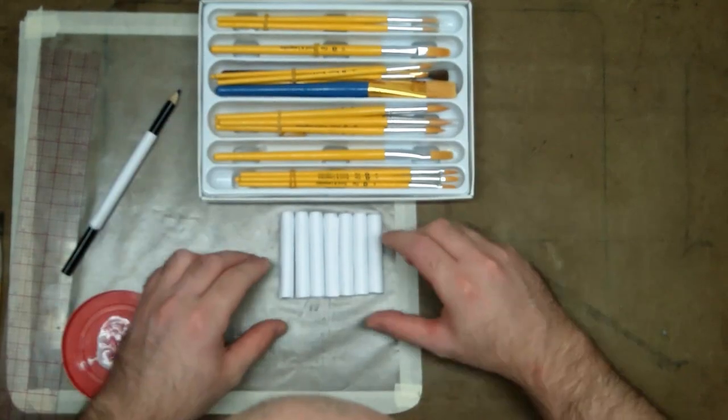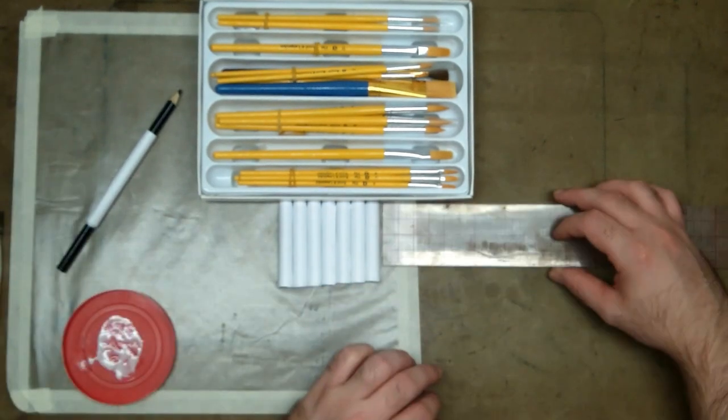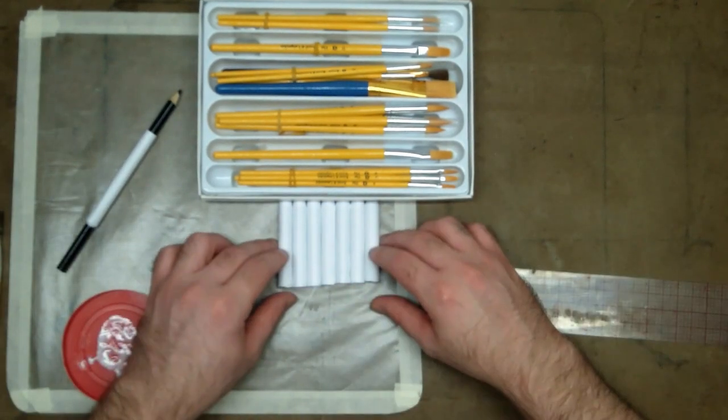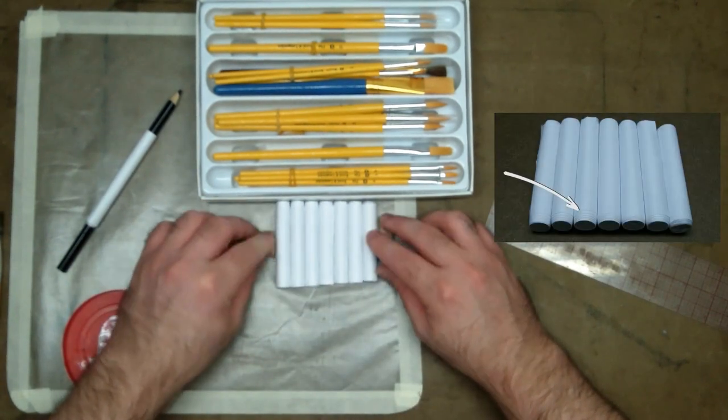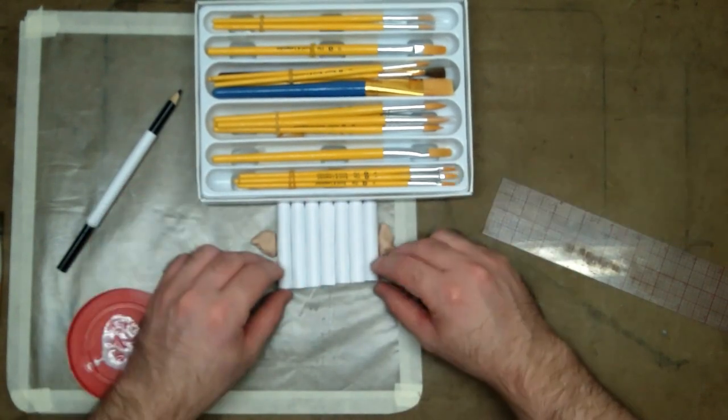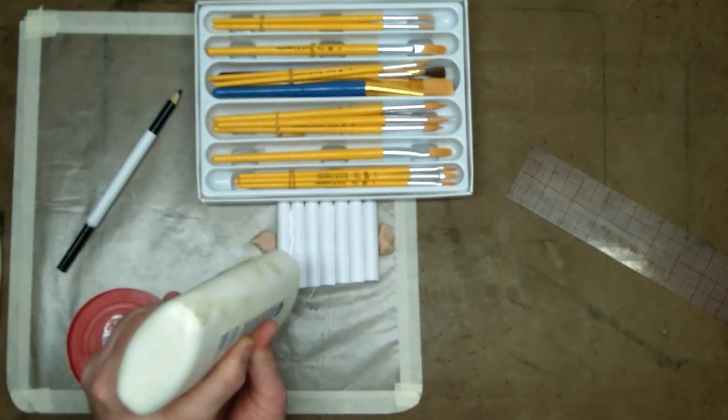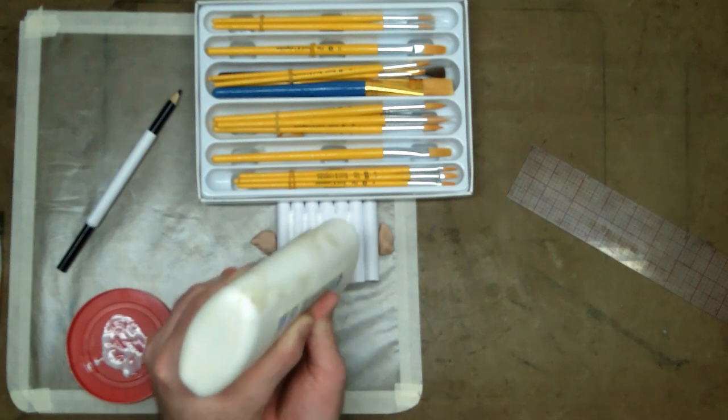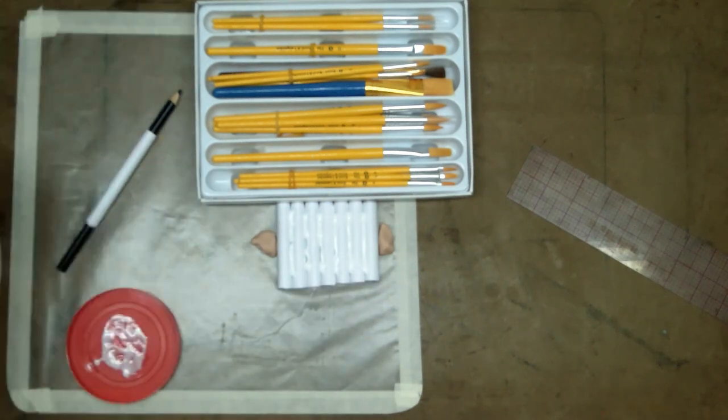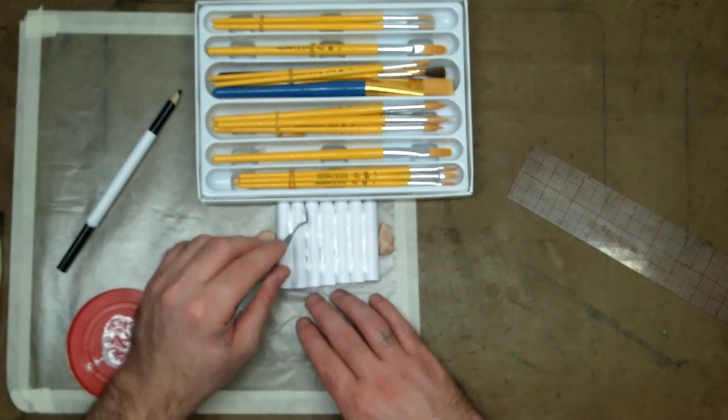Let them dry a little bit, and then find something in your house that's flat. I'm using this package of paintbrushes. Line them up, but you want to line them up where it spiraled, the part that spiraled. So, the inside is a lot cleaner where the pencil enters. And then just dump some glue in between them.